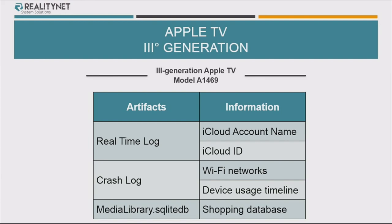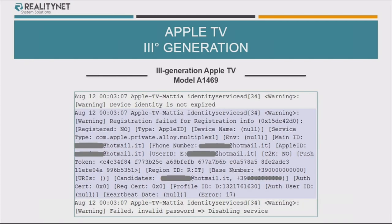Crash logs can be useful because you can get not only the history of what happened on the device and create a timeline, but you can also get information about the Wi-Fi networks the device was connected to. So if you have an Apple TV that was moved from one place to another, in the crash logs you can get a sort of history — a log of the Wi-Fi networks the Apple TV was connected to. And last, the media library database. This is an example of information taken from the crash logs — you have phone numbers, the email address of the user, and things that are interesting for an investigation.